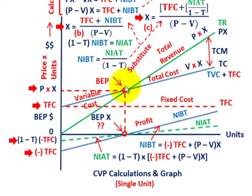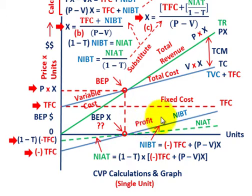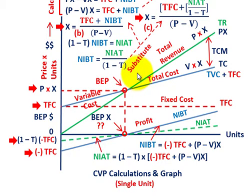Based on that quantity, we can determine the profit the company is going to be looking at. We're going to go over the graph and then look at a generalized solution to solve for the break-even point.